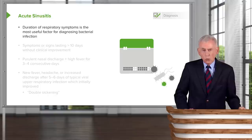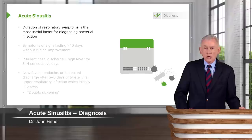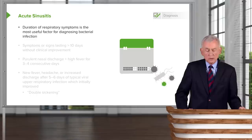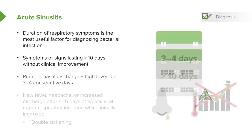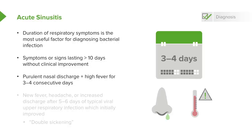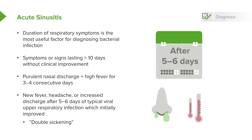The most important factor for an evaluating physician is how long the respiratory symptoms have been present. Symptoms or signs lasting more than ten days without clinical improvement of any kind — that's when we think about bacterial sinusitis. Also, purulent nasal discharge with high fever for three to four days, or new fever, headache, and increased discharge after five to six days of a typical viral syndrome. The headache is generally located anteriorly where the sinuses are and is particularly aggravated by leaning forward.